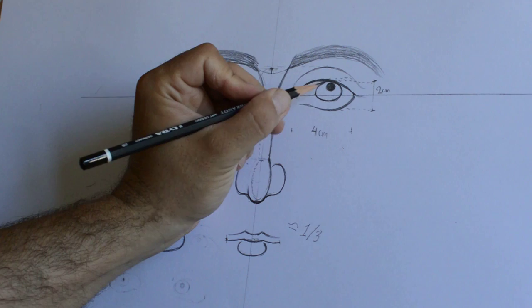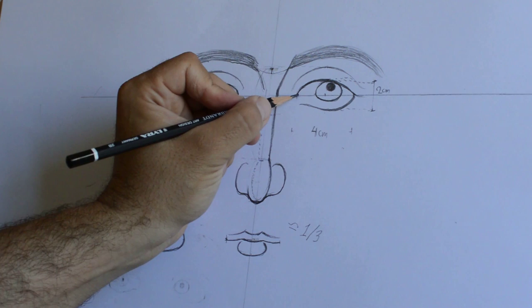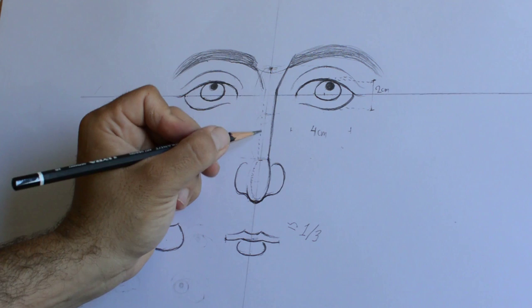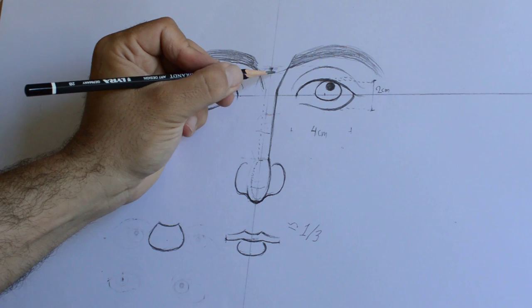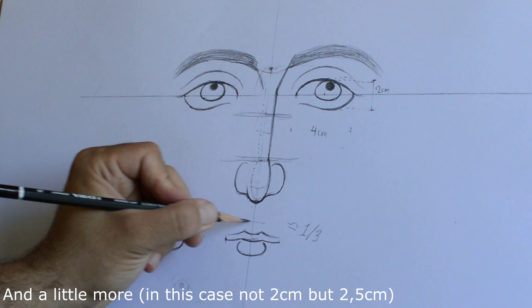So again, the width of the eye is half of its length. Four centimeters apart, one eye from the other. The length of the nose is two eyes and something, and then we divide the nose in thirds. The last third is the tip of our nose. The middle line of our mouth is half of the length of the eye.